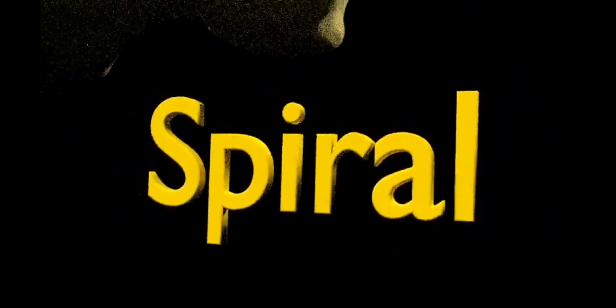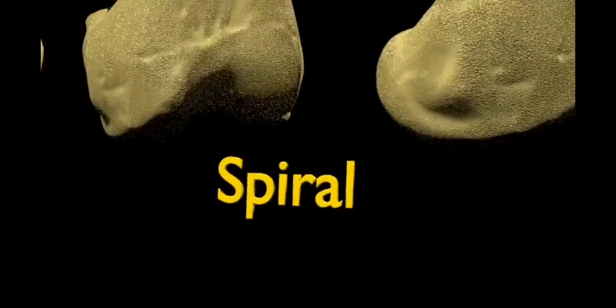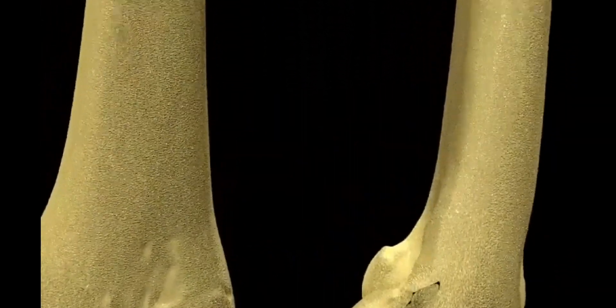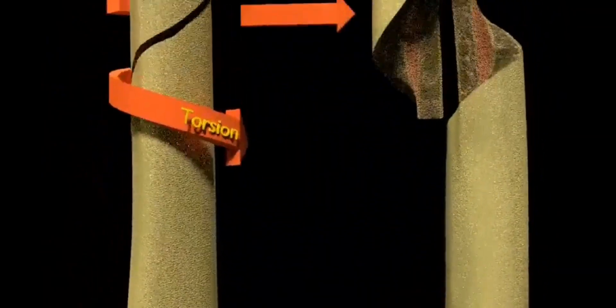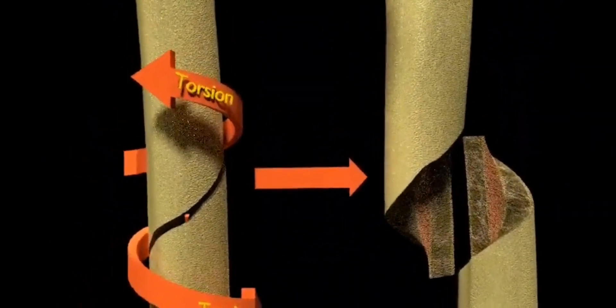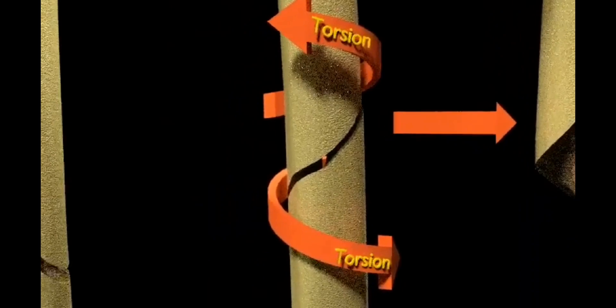Next, the spiral fracture. It occurs when torsion or rotational force is applied along the axis of a long bone such as the femur, tibia, fibula, particularly when the body is in motion while one extremity is planted.